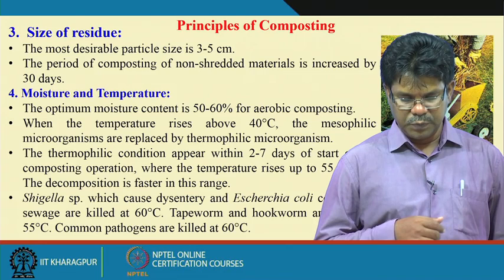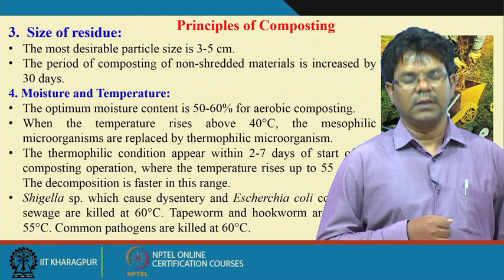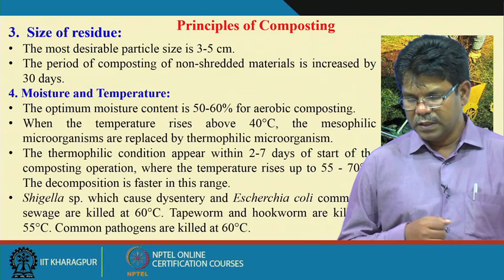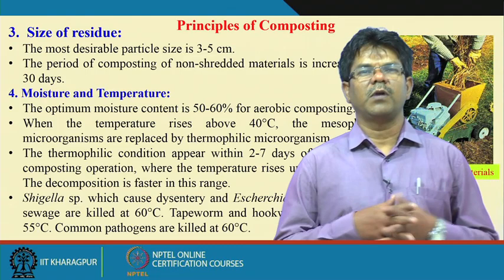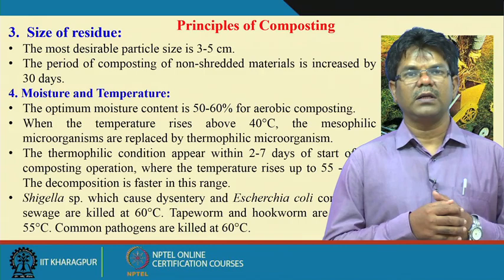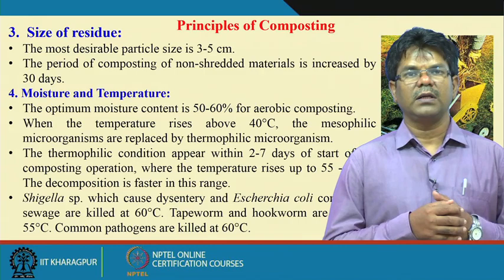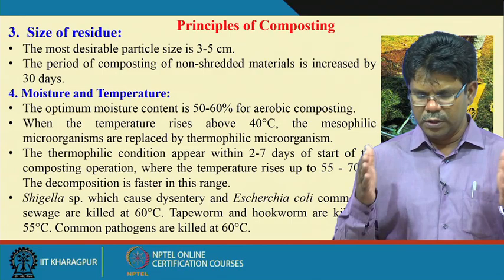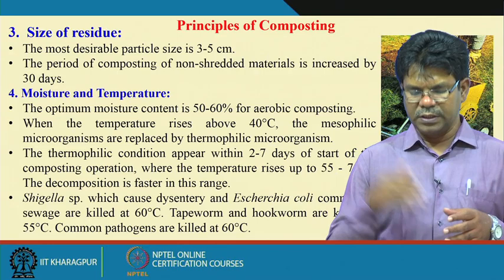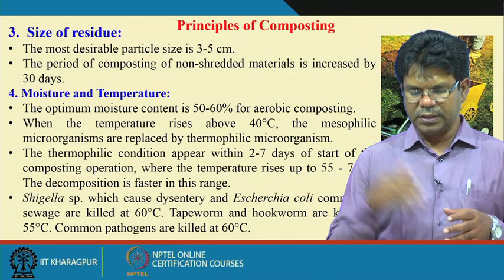At high temperatures, some pathogens are killed — those killed at temperatures beyond 55 to 60 degrees Celsius include Shigella species causing dysentery, E. coli, tapeworm, and hookworm, which are killed at 55 degrees Celsius. Maintenance of temperature at least 50 to 55 degrees Celsius or higher for at least 3 days is essential in the composting process so that the compost is free from many pathogens. Initially during the first 2 to 7 days of composting the thermophilic bacteria become active due to rising temperatures and start degradation, during which period many pathogenic organisms get killed.